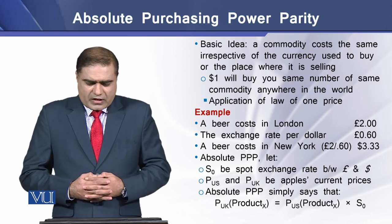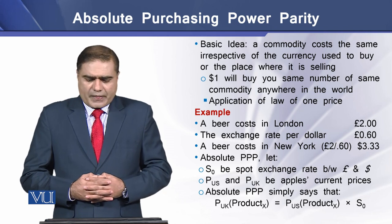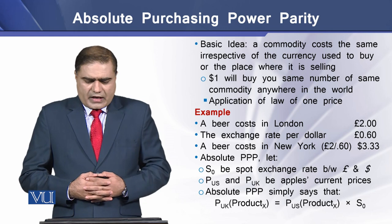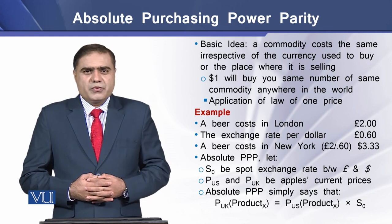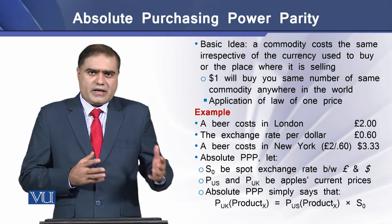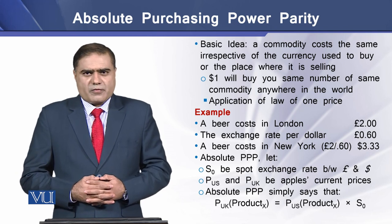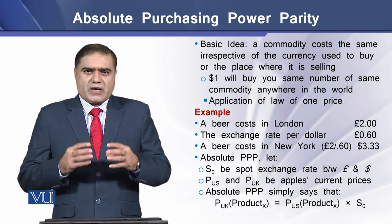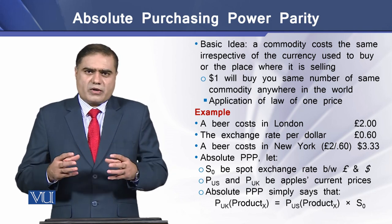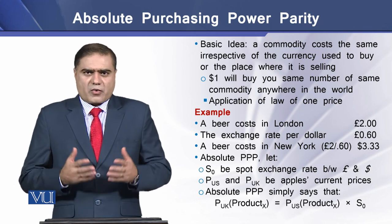So far as absolute purchasing power parity is concerned, let's assume S₀ is the spot exchange rate between UK Pound and US Dollar, and P_US and P_UK are the prices of apples in the US and UK respectively. Then absolute purchasing power parity says that the price of any commodity in UK is equal to the price of the same commodity in US multiplied by the spot exchange rate.